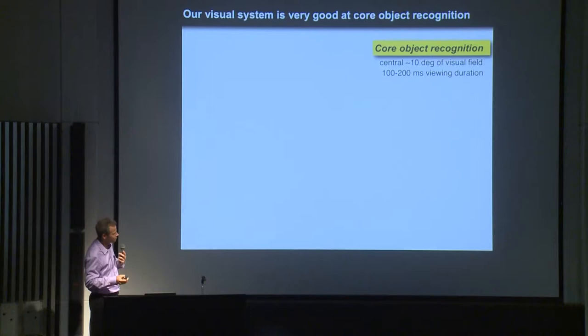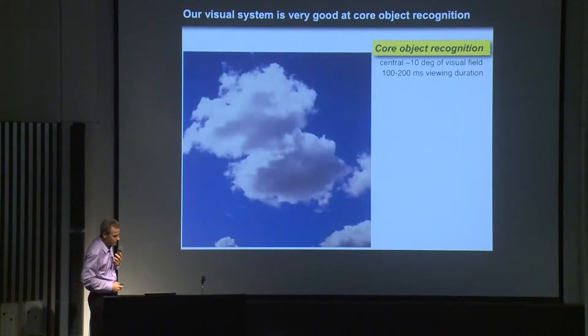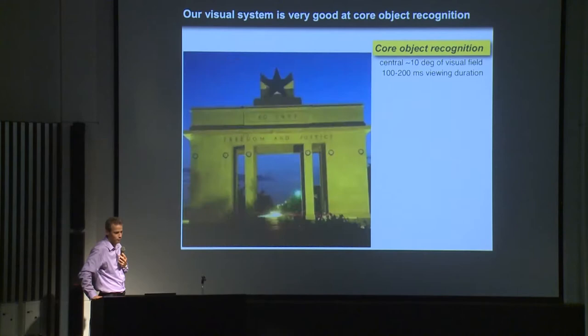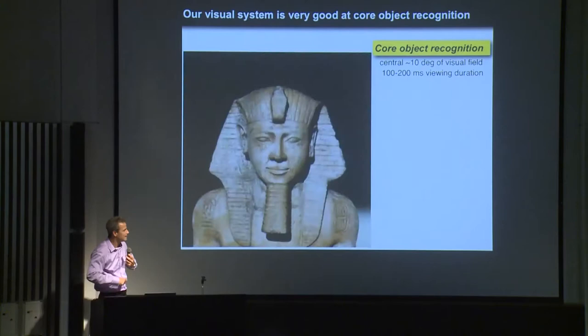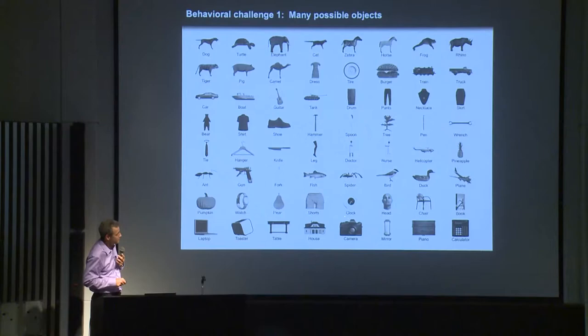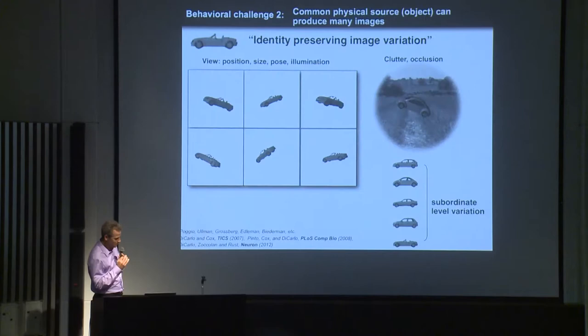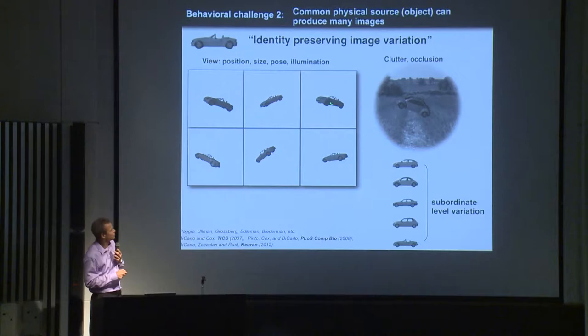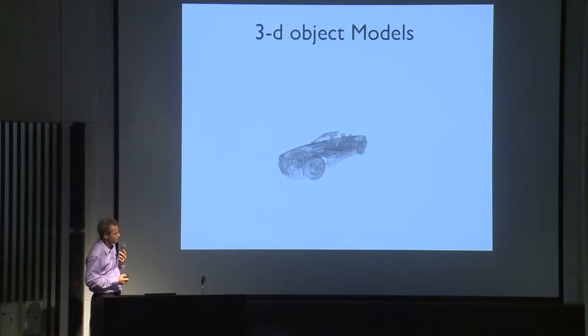You could recognize one or more objects in each and every one of those glimpses. That ability — in the central 10 degrees, in 100 to 200 milliseconds of viewing duration — to extract at least one object, is what we call core object recognition. That's our problem. It's not all of vision, but we think it's core to the general problem. This rapid serial visual presentation was shown in the 70s: we can do quite good recognition of at least one object in almost each and every image.